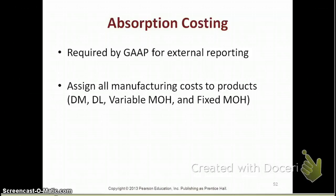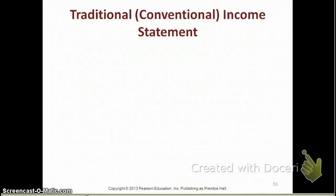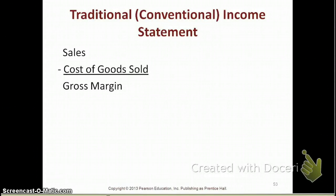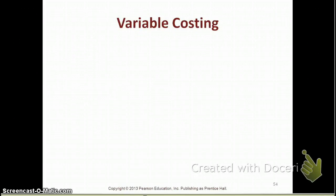Absorption costing is the method used in our traditional or conventional income statement — the type covered earlier in the semester and in Accounting 1. The traditional income statement starts off with sales, you subtract your cost of goods sold to arrive at gross profit, then from gross profit you subtract your other expenses to end up with operating income.